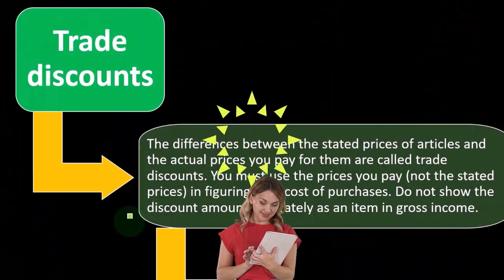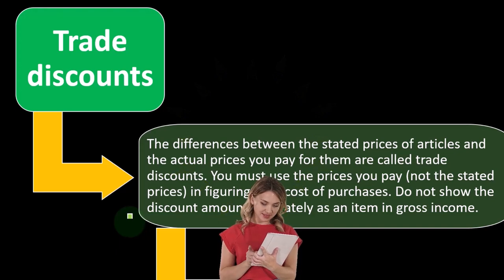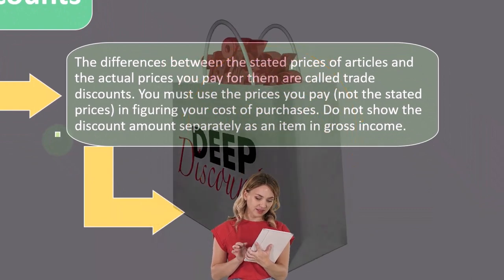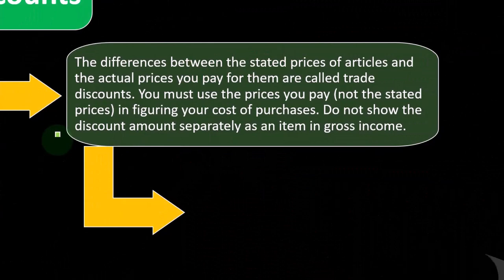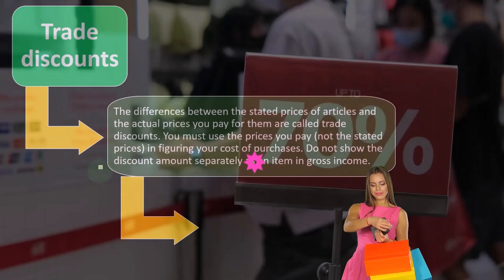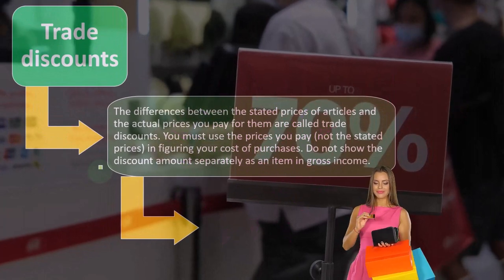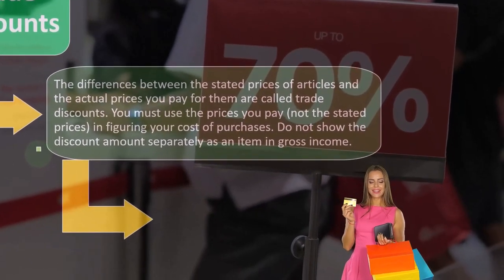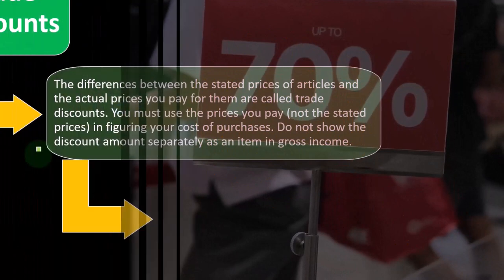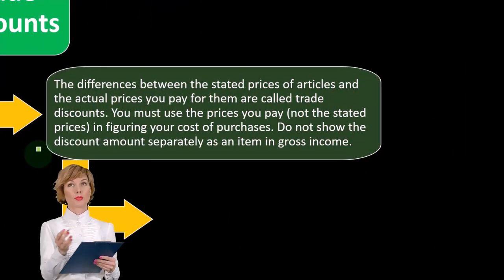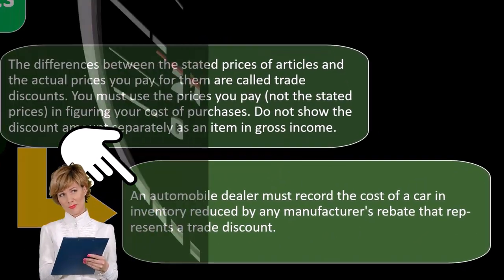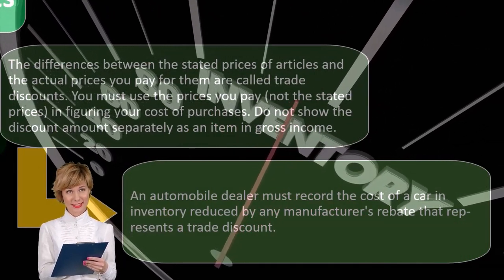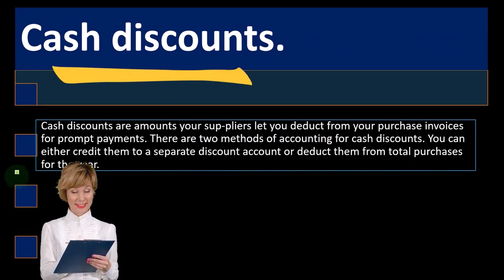Trade discounts: the differences between the stated prices of articles and the actual prices you pay for them are called trade discounts. You must use the prices you actually pay — not stated prices — in figuring your cost of purchase. You're purchasing inventory at a stated sticker price, but you bought them for something less. You want to record them at the price you actually paid. Do not show the discount amount separately as an item in gross income. An automobile dealer, for example, must record the cost of a car in inventory reduced by any manufacturer's rebate that represents a trade discount.